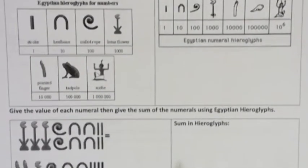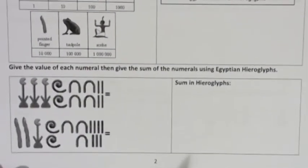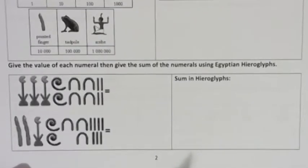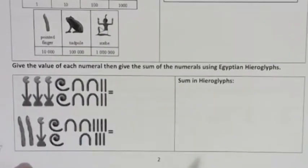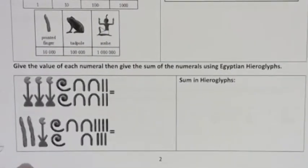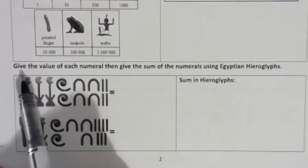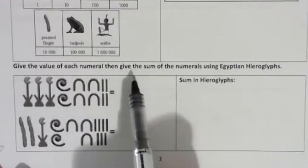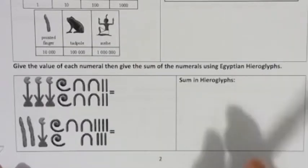But what I want you to be able to do is use the value of those symbols to write them into our system, Hindu-Arabic. This one, though, says give the value of each numeral and then give the sum of the numerals using Egyptian hieroglyphs.